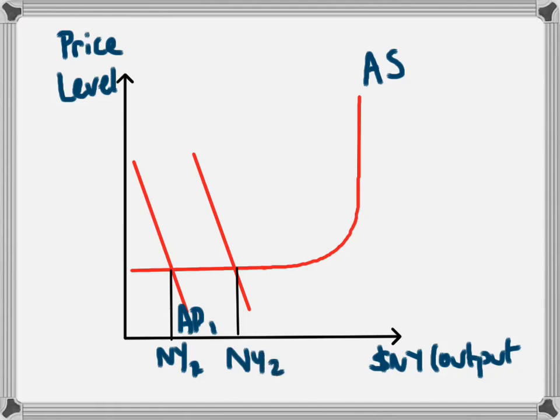We've had an increase in aggregate demand from AD1 to AD2, and as a result there's been an increase in national income from NY1 to NY2. But businesses have been willing to produce this extra output without increasing their prices. This matches the Keynesian view of economics, which says that when the government intervenes by increasing spending it will increase output, and this is true in economies operating at very low levels of national income.